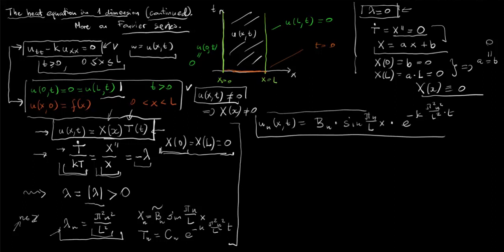Looking for solutions satisfying the heat equation and the given boundary conditions in the product form, we find as many such solutions as the number of all integers. Since n=0 corresponds to lambda=0, which we excluded, and since solutions with negative n differ from positive n only by sign, we can restrict to n being natural numbers 1, 2, 3 and so on.